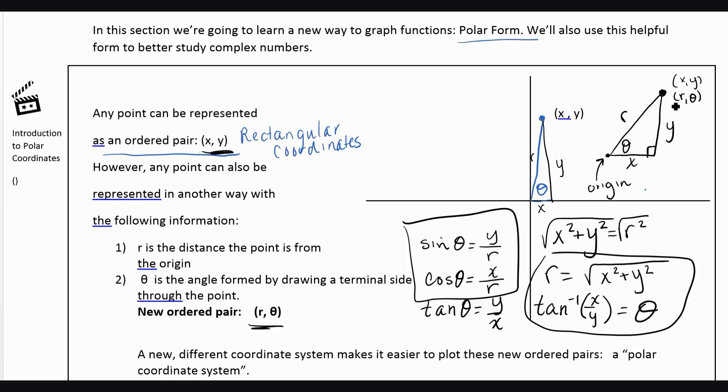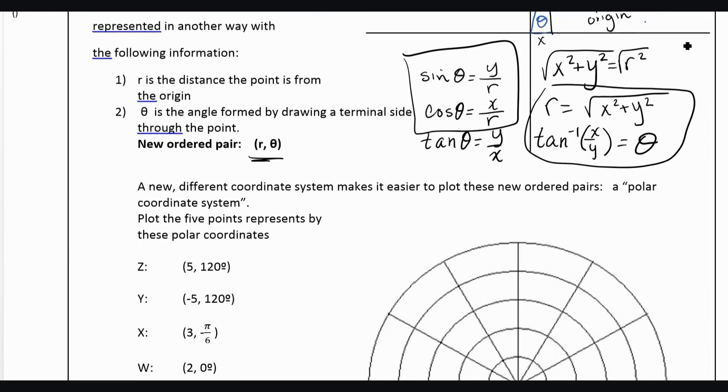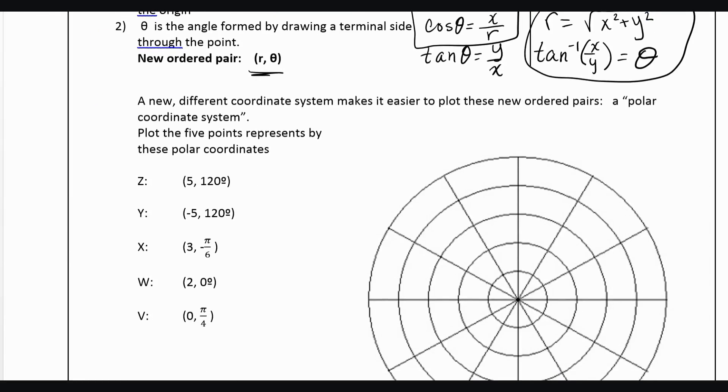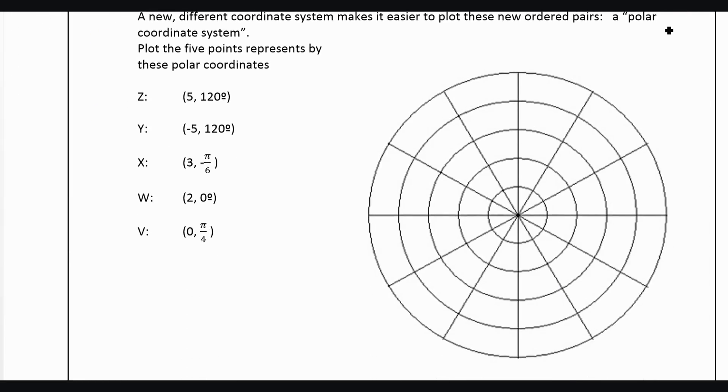But first, let's just get some practice graphing in this new coordinate system. So our new kind of graph paper would actually look kind of like a bullseye, look like circles here. So let's get a different color. Let's do green.